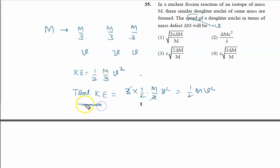This total kinetic energy will be produced due to the energy produced by the mass defect, and mass defect is delta M. So energy produced by the mass defect is given by delta M into C square equal to one by two M into V square.